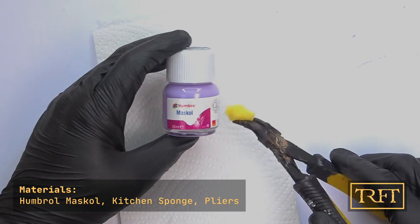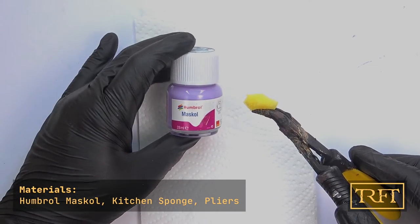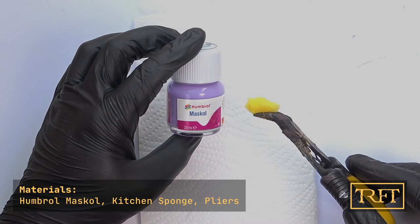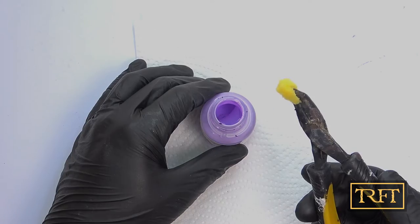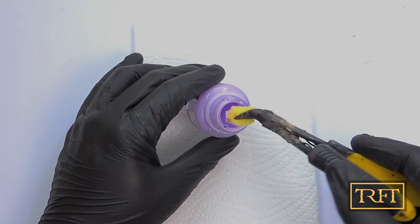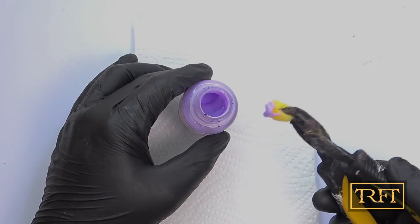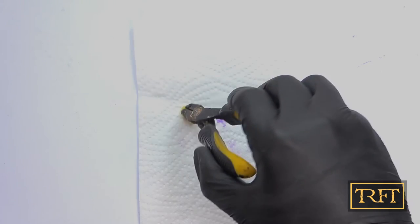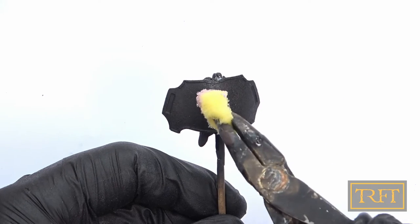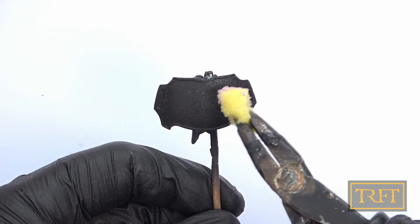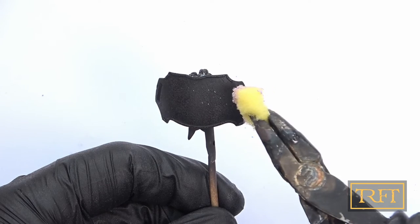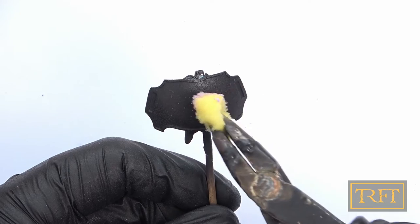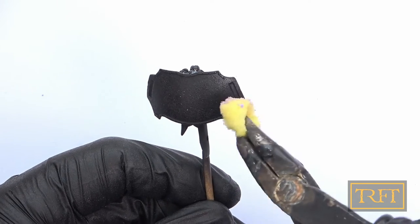Now for what is probably the most important step in the whole process. We're going to apply Humbrol Maskol with a bit of kitchen sponge held with pliers in order to create realistic chipping effects. My apologies for the lighting here guys, I forgot to close the window in front of my desk and the natural lighting resulted in massive overexposure, but hopefully you can still make out the details. First we unload most of the product onto some kitchen paper just as if we were dry brushing, then we're going to gently dab our sponge at the surface. Here you can see how I begin to apply the liquid mask onto one of the texturized panels.